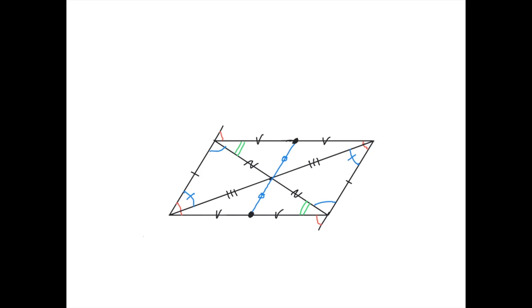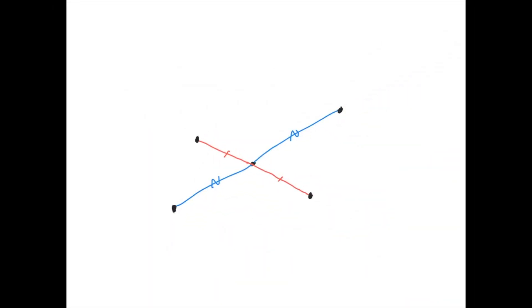Now we're going to see how we can prove that a quadrilateral is a parallelogram, so we can use these properties. First, suppose that we have a point that is the center of symmetry, and then the reflections of two points — this point gets reflected here, and this point gets reflected here. Then we're going to prove that these four points form a parallelogram.